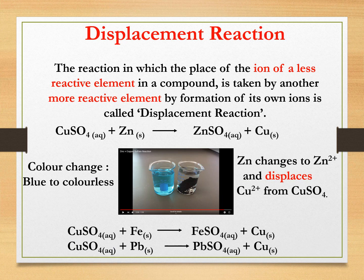This is the third type of reaction: displacement reaction. The reaction in which the place of the ion of a less reactive element, here copper, is taken by another more reactive element, here zinc, by formation of its own ions — you can see zinc has changed to Zn²⁺ ions — is called a displacement reaction.